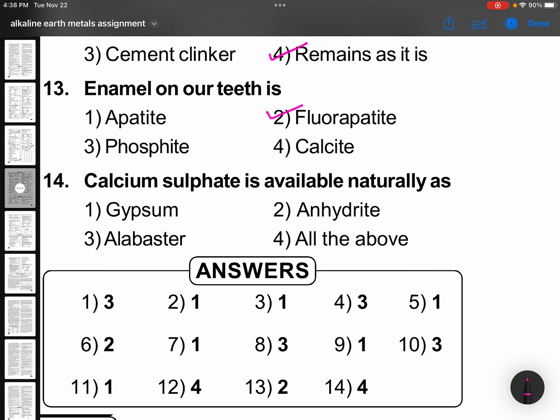Calcium sulfate is available naturally as anhydrite, gypsum, alabaster, all these are nothing but calcium sulfate forms. So, all of the above. These are your answers.